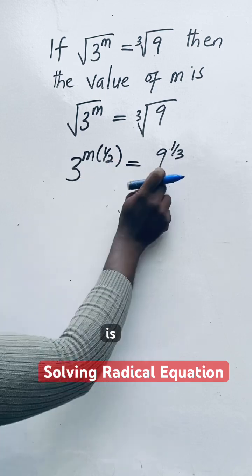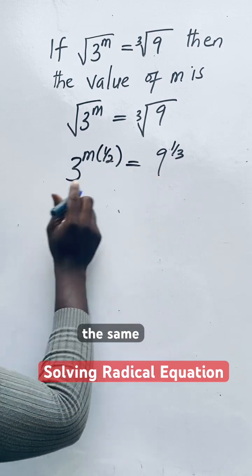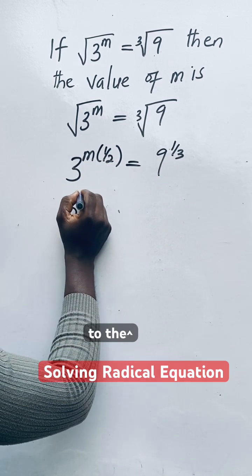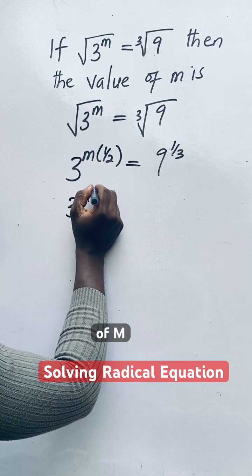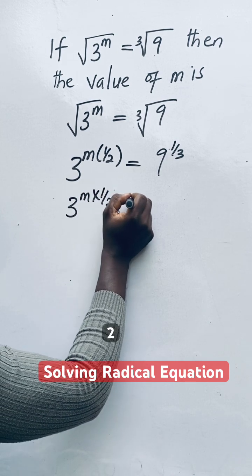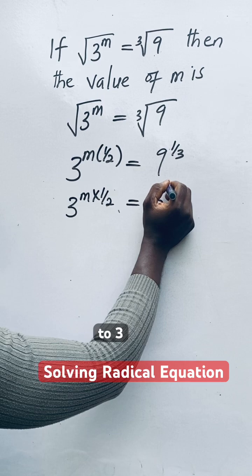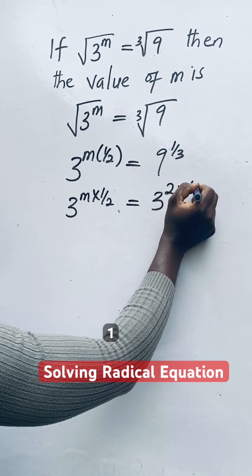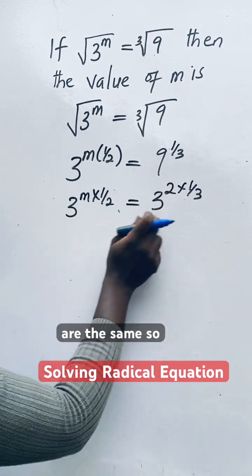So the next step is make the base the same. So you have 3 raised to the power of M times 1 over 2 is equal to 3 raised to the power of 2 times 1 over 3. So the bases are the same.